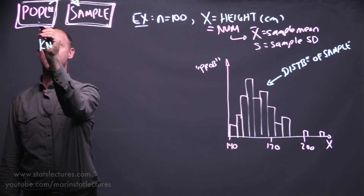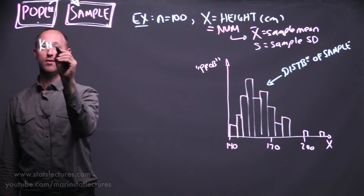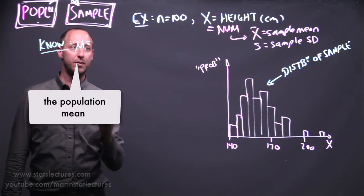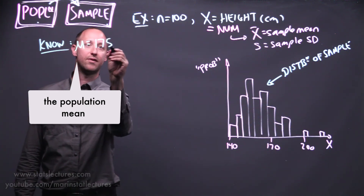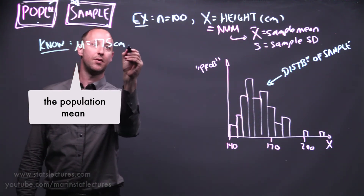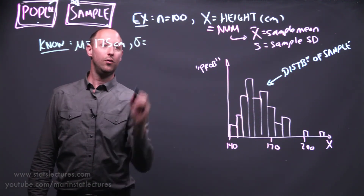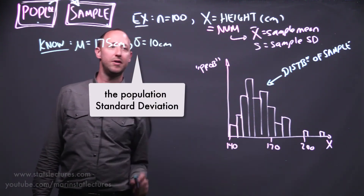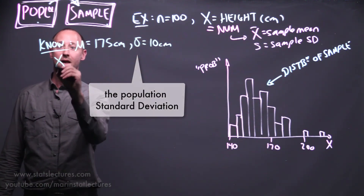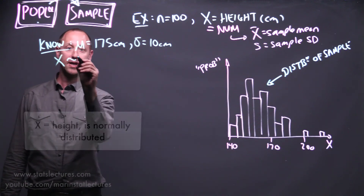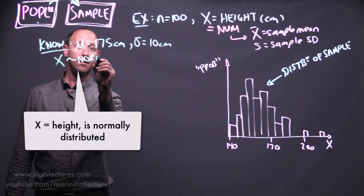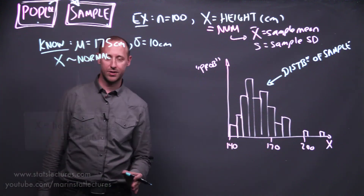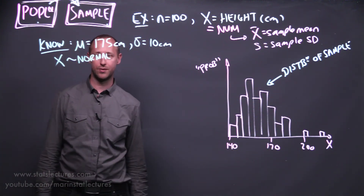At the population level, suppose we know that the true mean height is 175 centimeters, the true standard deviation is 10 centimeters, and x — being the height — is approximately normally distributed. The normal distribution is something we'll formally introduce soon.